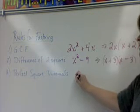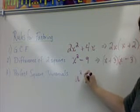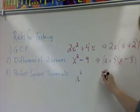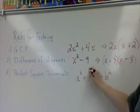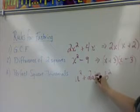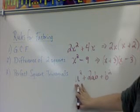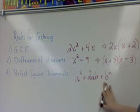Their form is always the first term is squared. The last term is squared. And the middle term is double the square roots of the first and last term.